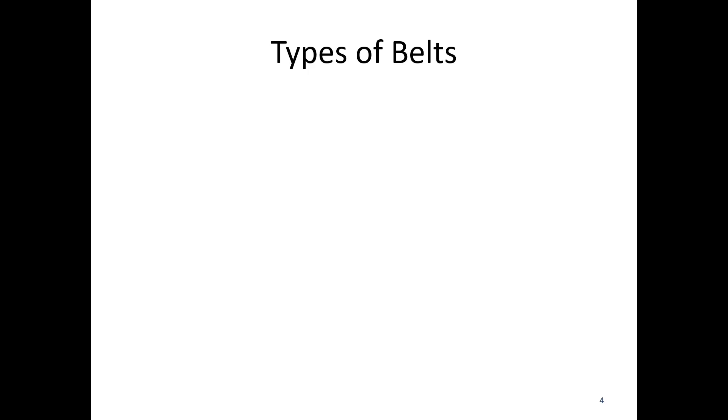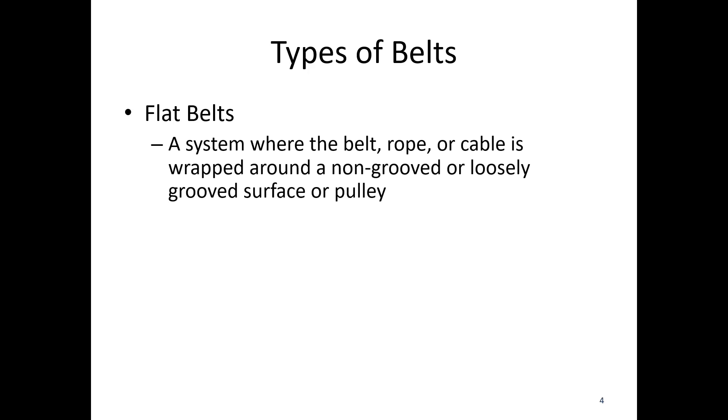Let's talk about the types of belts. First we have flat belts, which is a system where a belt, rope, or cable is wrapped around a non-grooved or loosely grooved surface or pulley. This is the simplest system and offers a base level of potential friction.